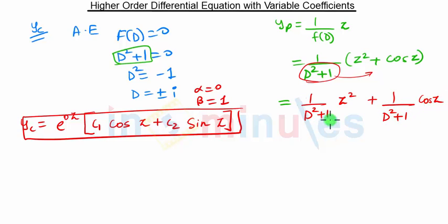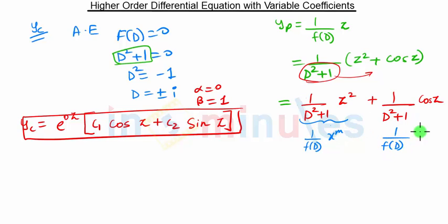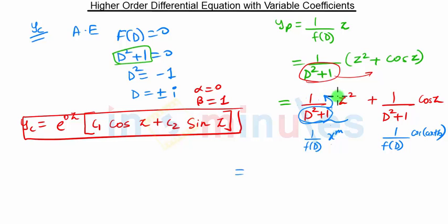Observing these two terms: the first is of the form 1/f(d) · z^m, and the second is of the form 1/f(d) · cos(az + b). For the first term, we take the denominator to the numerator, giving (1 + d²)^(-1) · z².